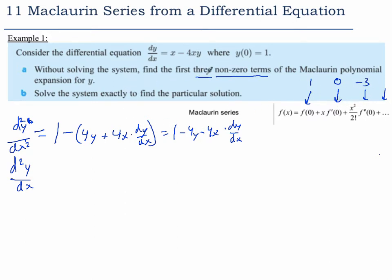So we need one more non-zero term, so we have to keep finding derivatives. If I differentiate this, I get 4 dy dx for that, and just a minus 4 here. Oh sorry, this is going to be product rule again.